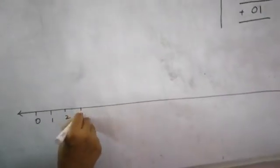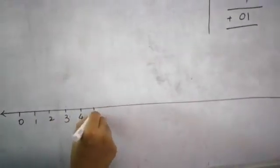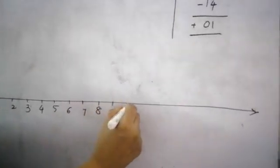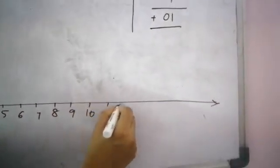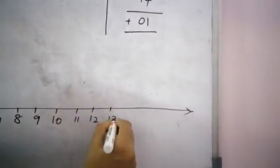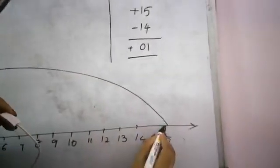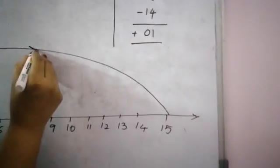Draw the number line. 0, 1, 2, 3, 4, 5, 6, 7, 8, 9, 10, 11, 12, 13, 14, and then last 15. First 0 to 15. Because it is plus, so keep the right arrow mark.